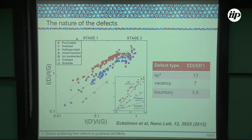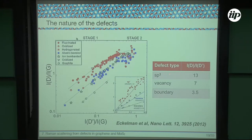Using Raman in graphene, you can also check the nature of the defects. By plotting the normalized intensity of the D band against the normalized intensity of the D-prime band, you can identify the type of defect in the system — for example, sp3 defects, vacancies, or boundaries. You can differentiate these three types of defects in graphene just using Raman.